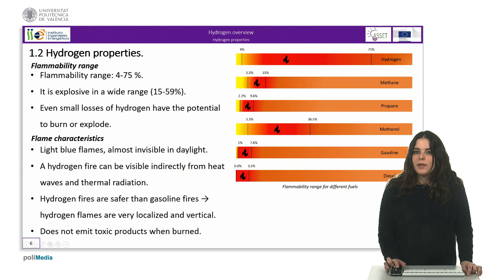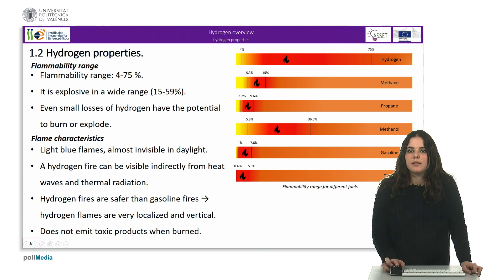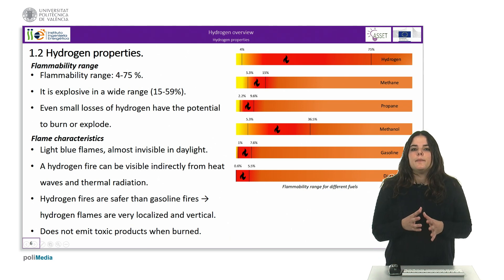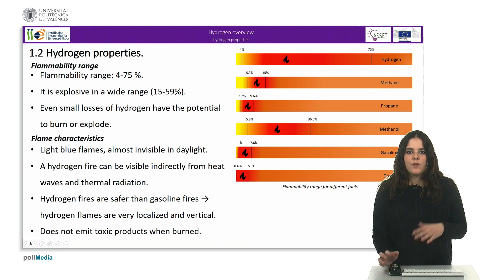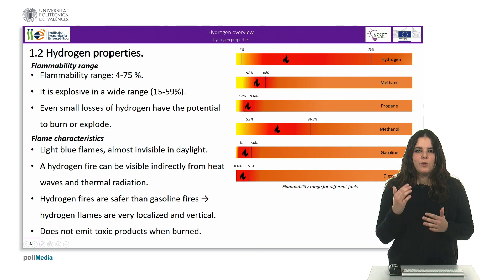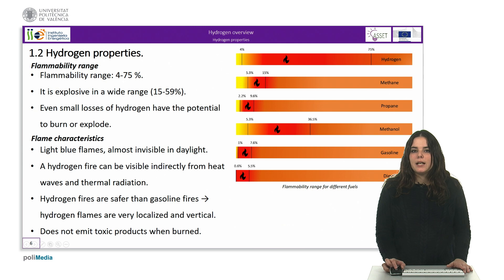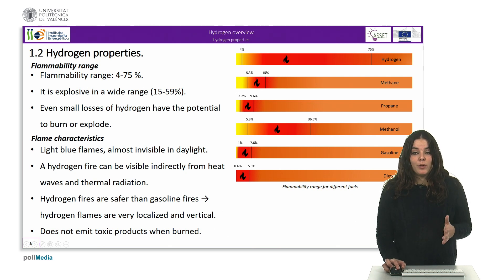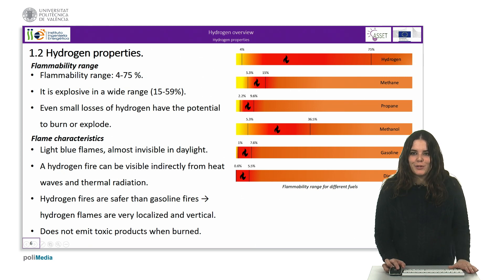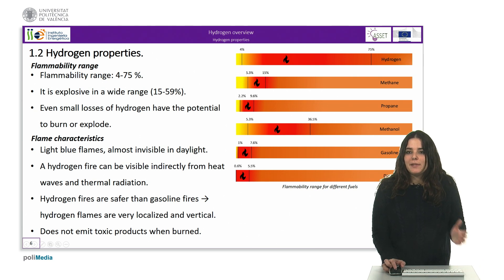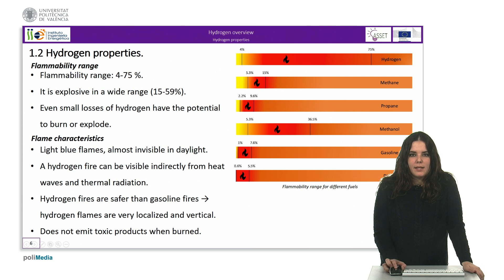The flammability range is defined by two limits. The lower flammability limit is the minimum concentration of gas in a mixture with air below which there is no flame propagation on contact with an ignition source. The upper limit is the maximum concentration above which flame propagation does not occur. Compared to other fuels, hydrogen has the widest flammability range, going from 4 to 75%. In addition, it is explosive in a wide range from 15 to 59%. Because flammability limits increase with pressure, even small losses of hydrogen have the potential to burn or explode, which means that appropriate safety measures must be taken when handling hydrogen.